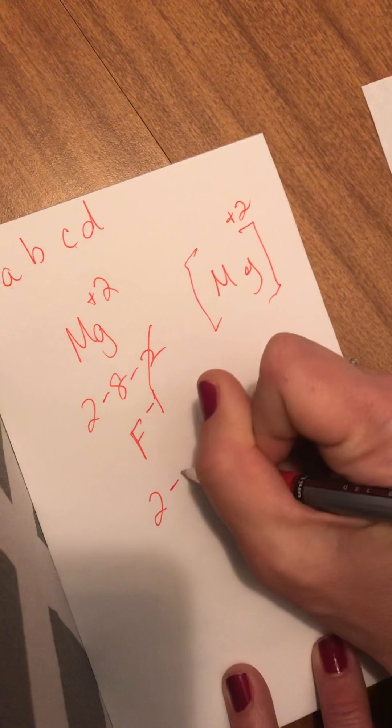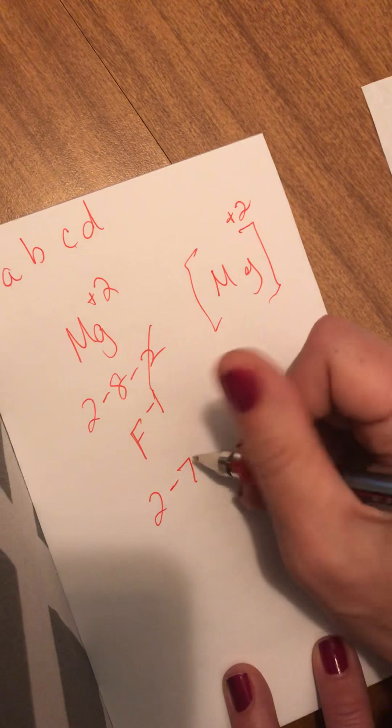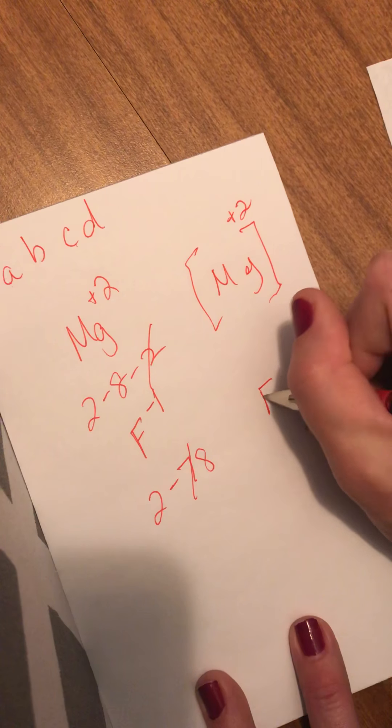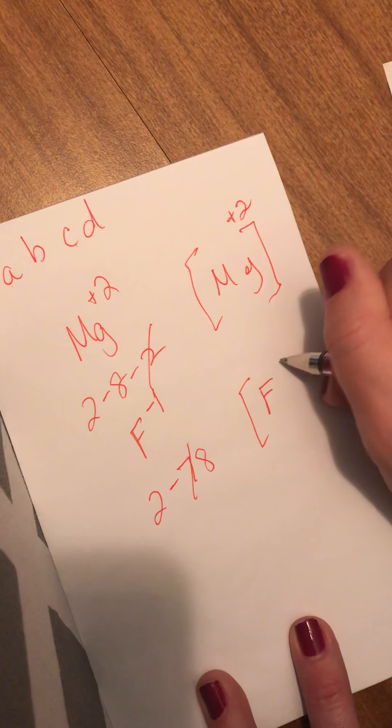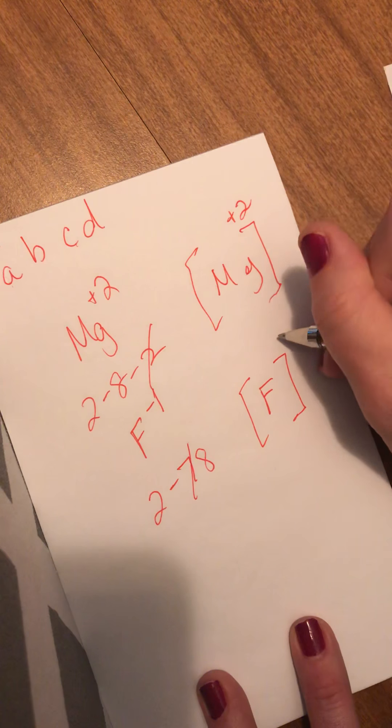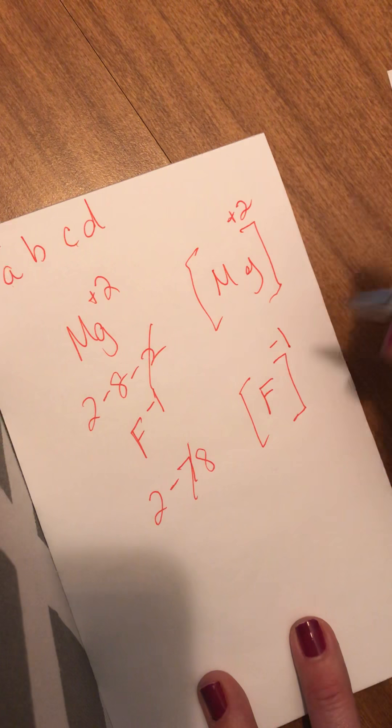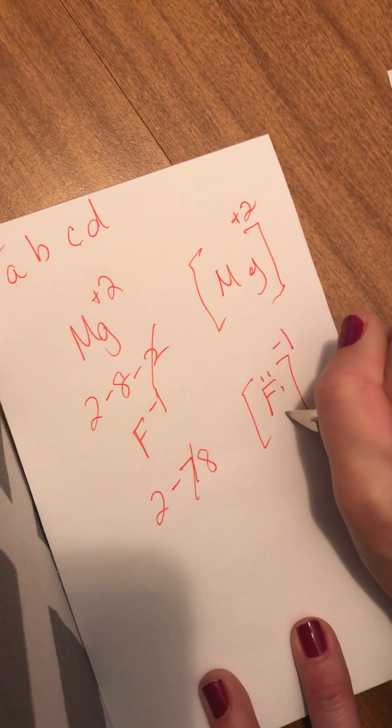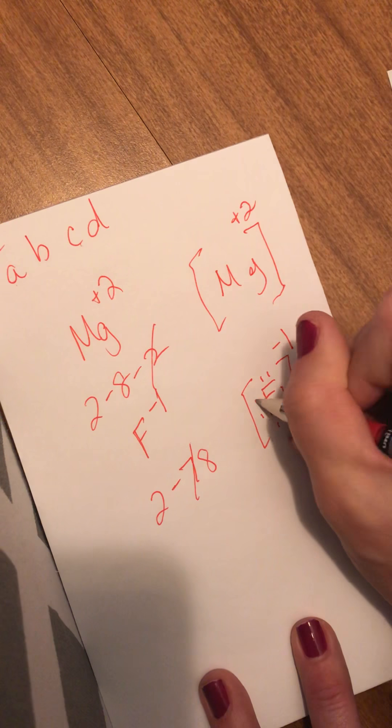F minus 1 was 2-7. The negative 1 tells me it gained 1. So now it became 2-8. So I do my atom. B I do my brackets. C I do my charge. And D I do my dots. I now have 8 dots. So 1, 2, 3, 4, 5, 6, 7, 8.